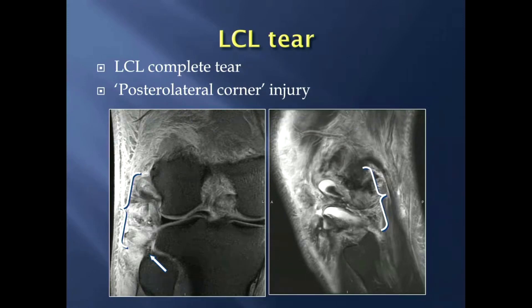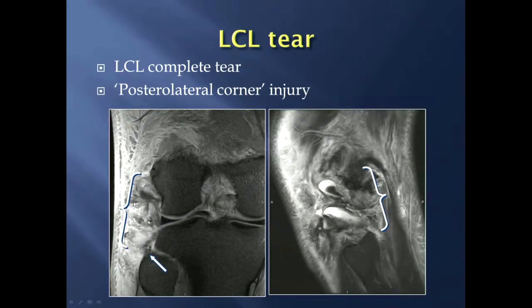This injury can be fairly significant, especially if associated with injuries to the biceps femoris tendon or popliteus tendon. Injury to the fibular collateral ligament is often given the name posterolateral corner injury. This is another site with smaller ligaments that can be torn. The most concerning to the orthopedic surgeon is the popliteal fibular ligament, a small ligament that often needs to be reconstructed or repaired in the setting of a severe posterolateral corner injury.